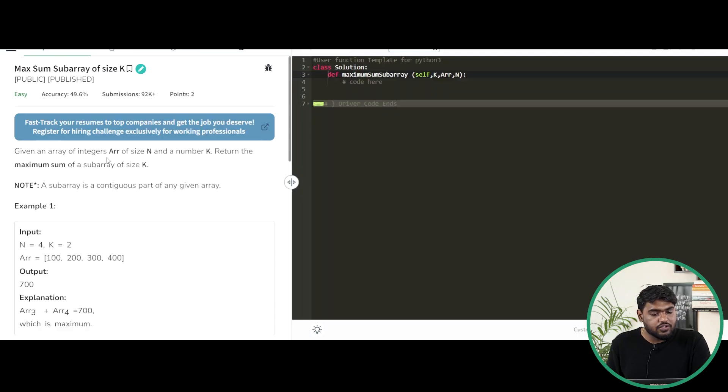Let's read the problem. Given an array of integers ARR of size n and a number k, return the maximum sum of a subarray of size k. A note is given: a subarray is a contiguous part of any given array.